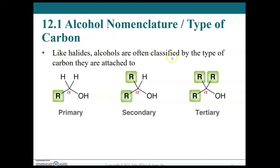Like the halides, alcohols are classified by the type of carbon they're attached to. A carbon with one other carbon bond — the alpha carbon — is a primary carbon, so this is a primary alcohol. If the alpha carbon is secondary with two alkyl groups attached, this is a secondary alcohol. And a tertiary alcohol has a tertiary alpha carbon. We'll see for other functional groups that the alpha position is not always defined this way — I'll make a point to emphasize that when it comes up.